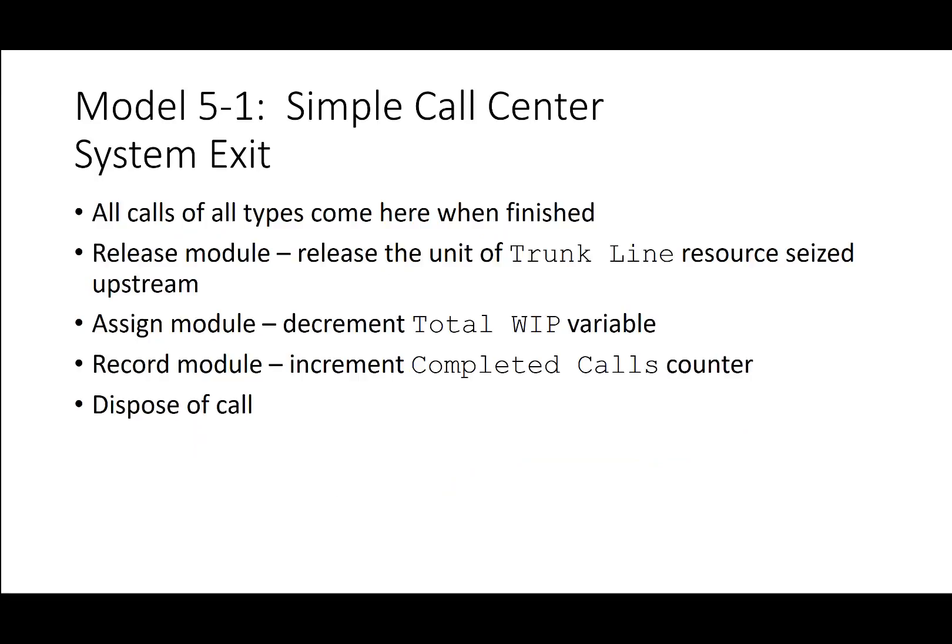At system exit, all calls of all types come here when finished. The release module releases the unit of trunk line resource seized upstream. Once the call is terminated, the trunk line is released and becomes available again. The assign module decrements the total WIP variable. The record module increments the completed calls counter, and then the call is disposed — reducing WIP by one and increasing completed calls by one.